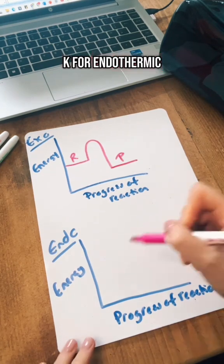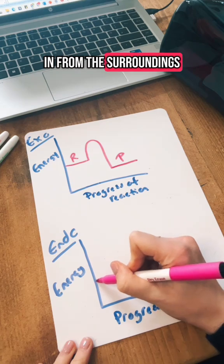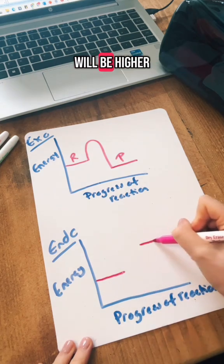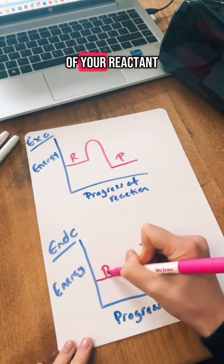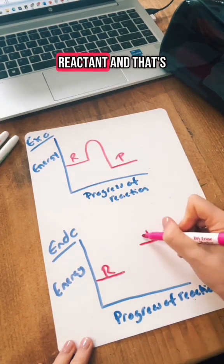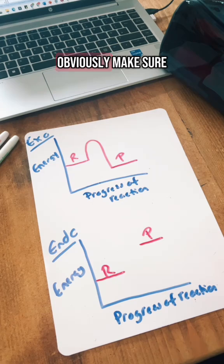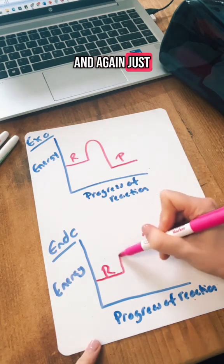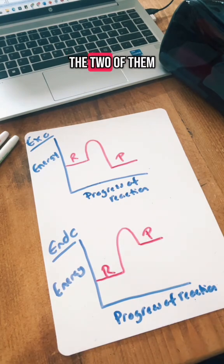For endothermic, energy is taken in from the surroundings, so the energy of your product will be higher than the energy of your reactant. So that's your reactant and that's your product. Make sure you write them out properly in your exam, and again just draw in the curve to join the two of them.